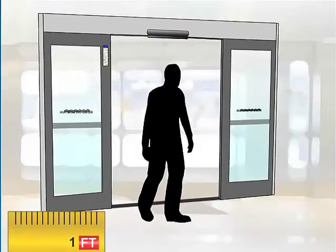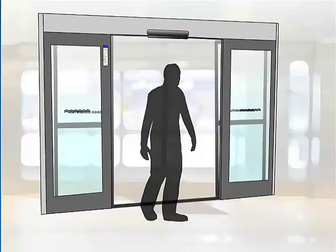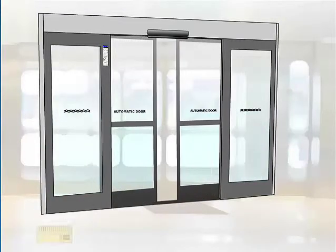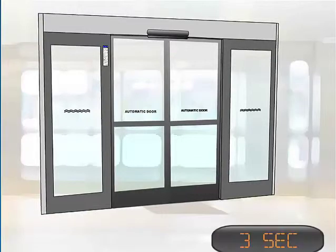The door should not close faster than 1 foot per second of door travel. For example, if the door leaf moves 3 feet from open to 6 inches of closed, the time should not be less than 3 seconds.